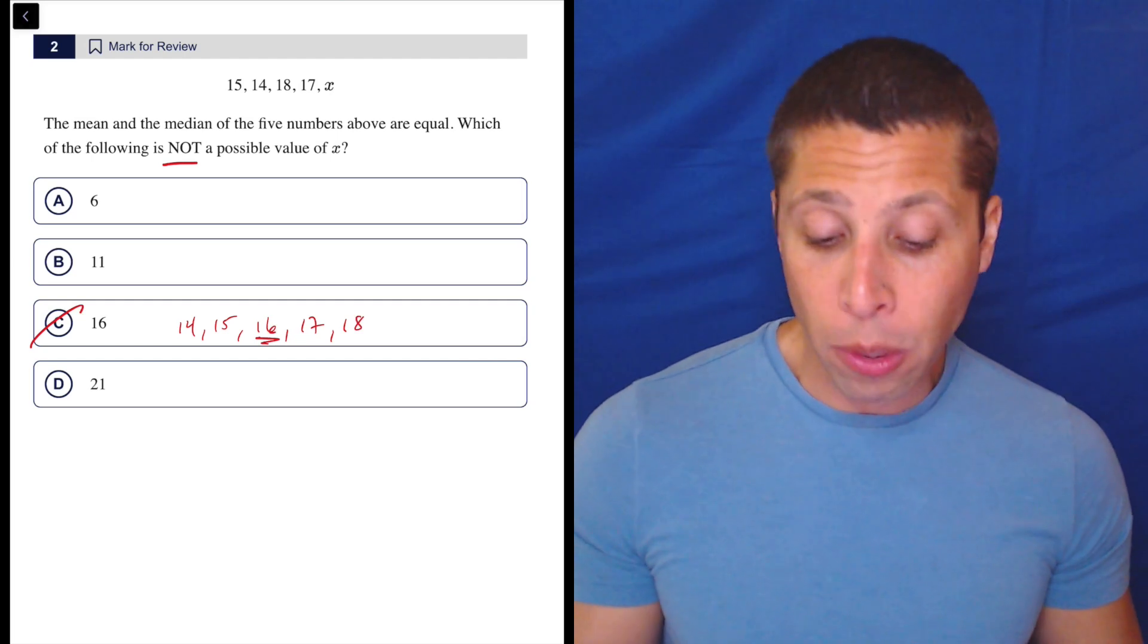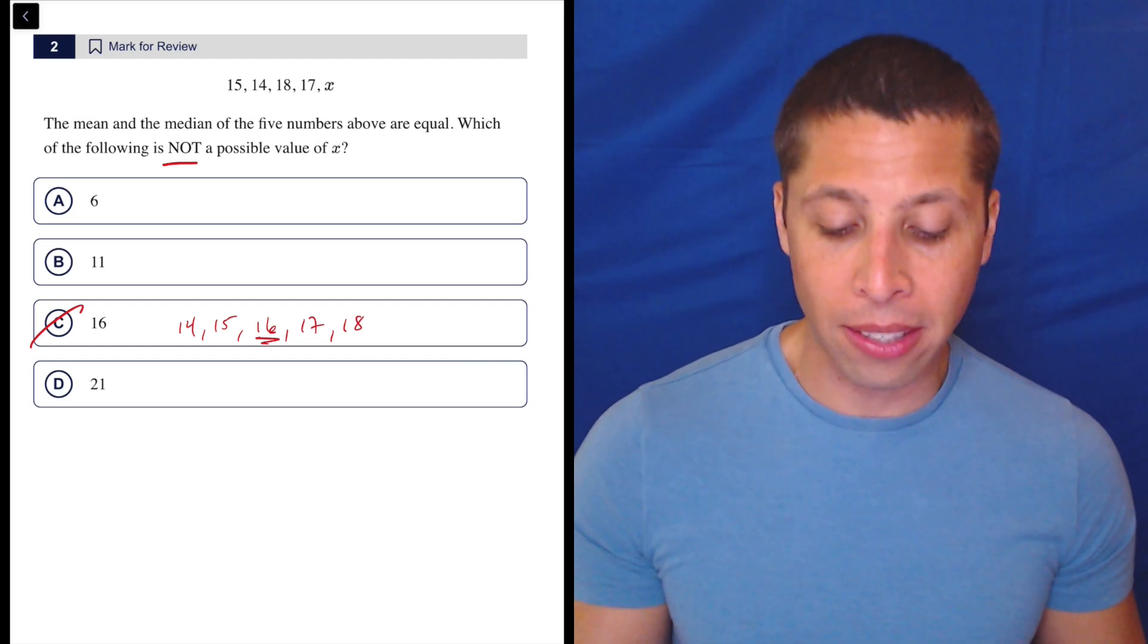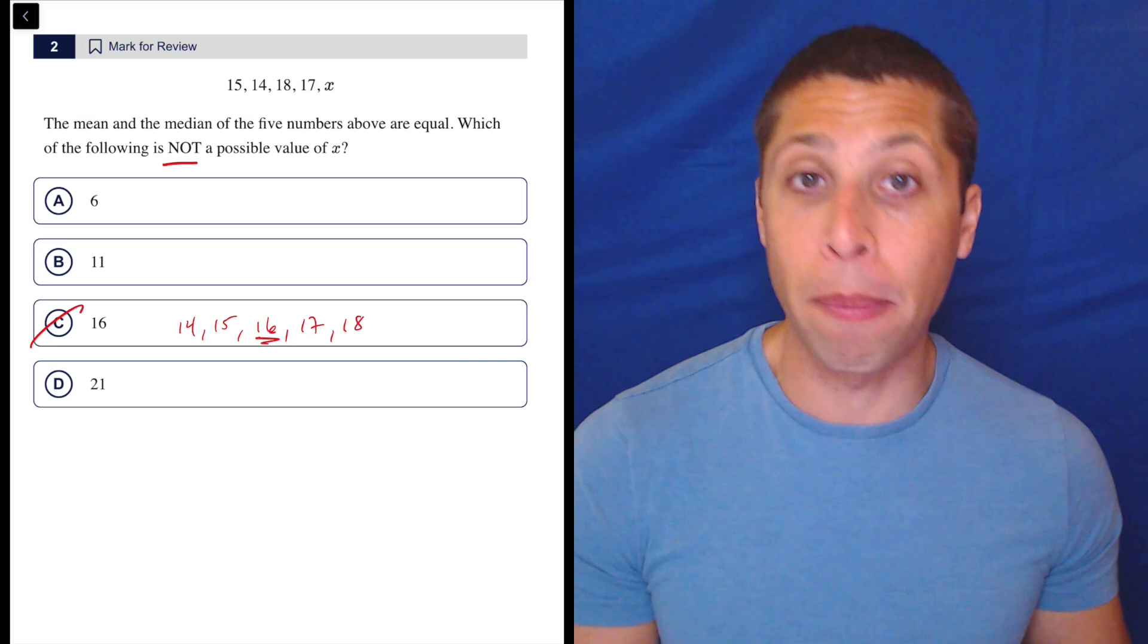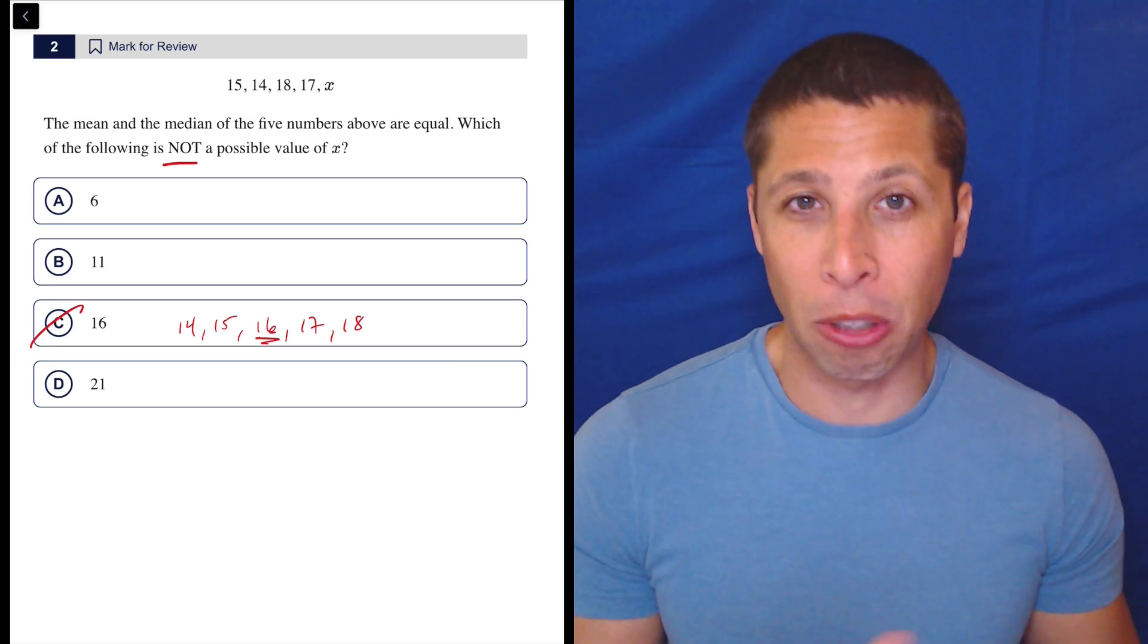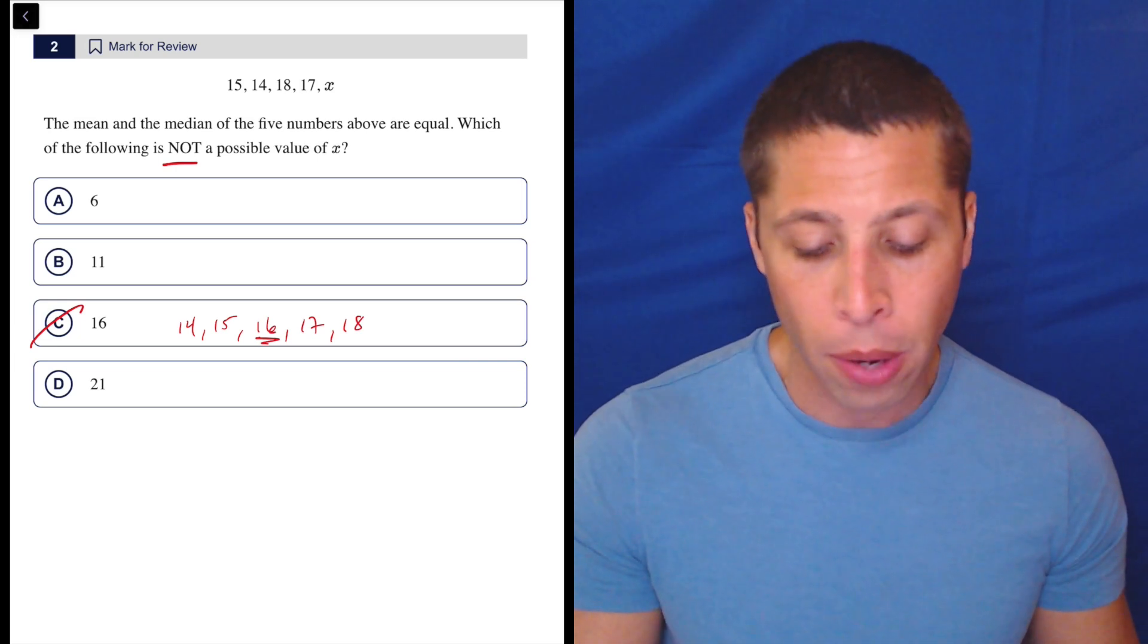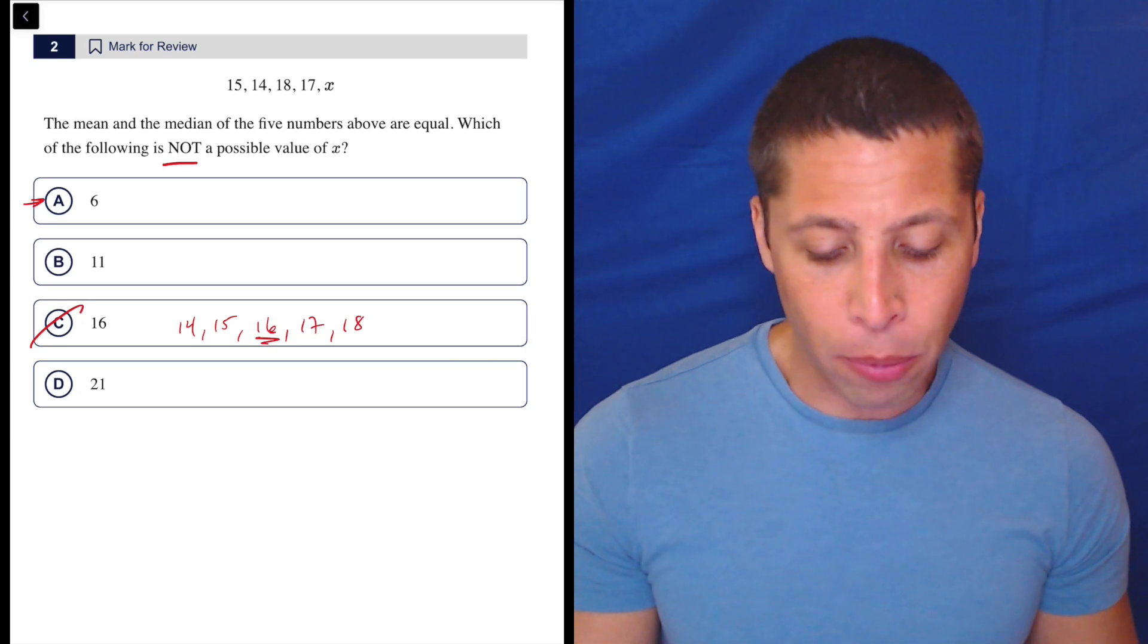From there, I would focus on the mean because what we want to do basically is see if the mean is going to be a member of the set. I don't really care so much about ordering things unless I absolutely have to. So the choice that I go to is A because I'm like, well, that's really weird, right? Six is very far away.